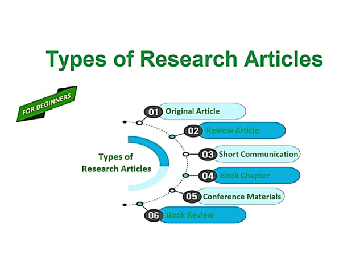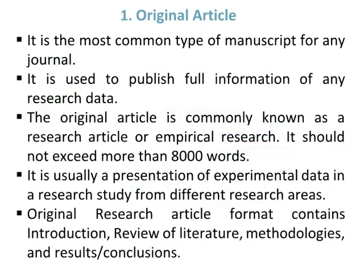Types of research articles: a beginner's guide to conduct research. Number one type of research article is the Original article. It is the most common type of manuscript for any journal, used to publish full information of any research data. The original article is commonly known as a research article or empirical research, and should not exceed more than 8,000 words. It is usually a presentation of experimental data from different research areas.